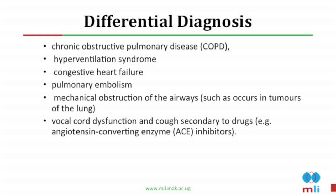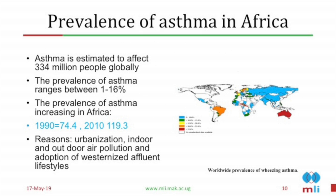Now let us look at the prevalence and epidemiology of asthma in Africa. Millions of people suffer from asthma globally. The prevalence lies between 1 and 16%, depending on where you are, but we are seeing an increasing burden in Africa. A systematic review published in 2013 shows that in 1990, Africa had 74 million people with asthma, but by 2010 this number had risen to almost 120 million. This increase is associated with urbanization, indoor air pollution, worsening air quality, and changes in lifestyle.